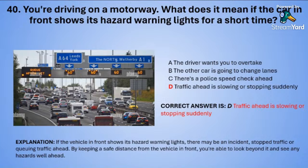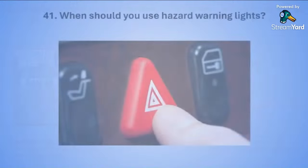If the vehicle in front shows its hazard warning lights there may be an incident, stopped traffic or queuing traffic ahead. By keeping a safe distance from the vehicle in front, you will be able to look beyond it and see any hazards well ahead.